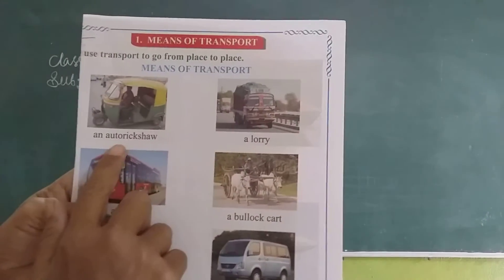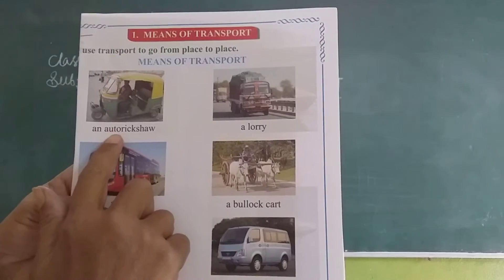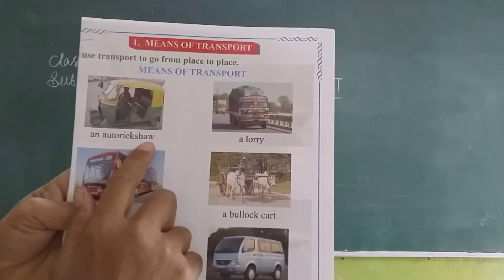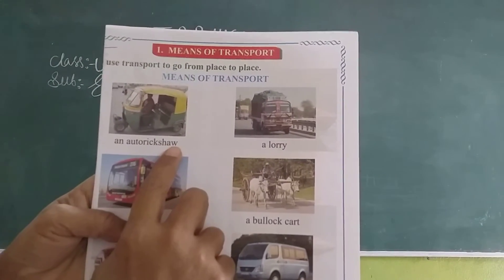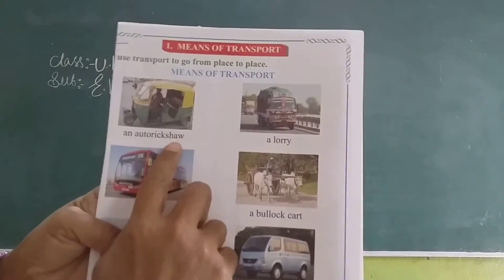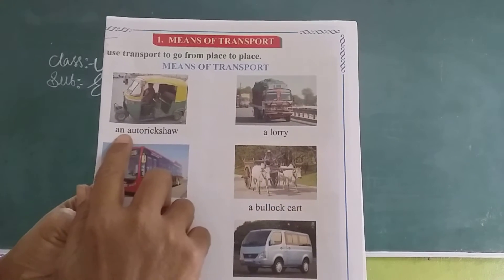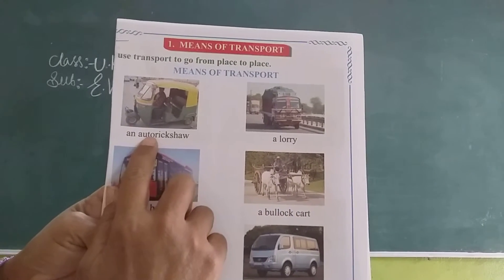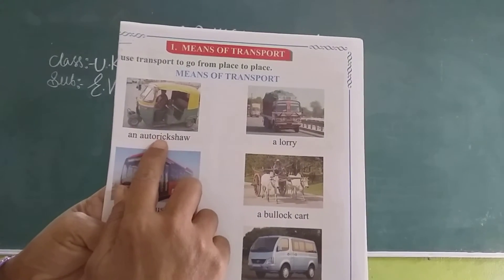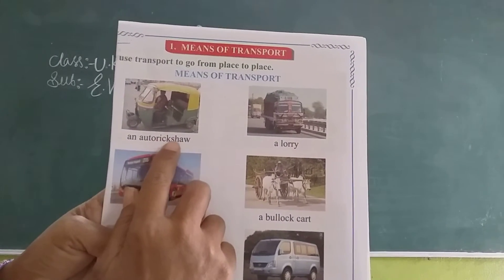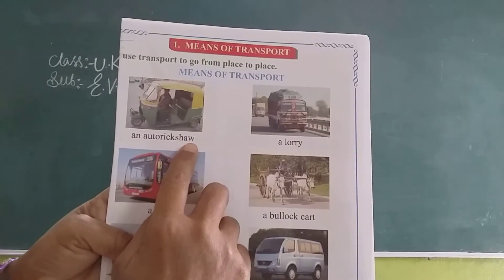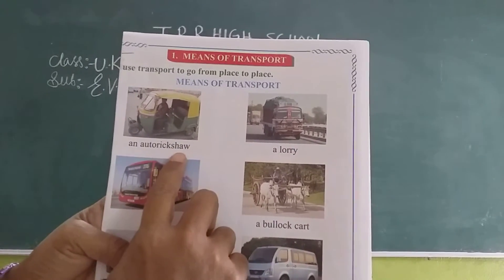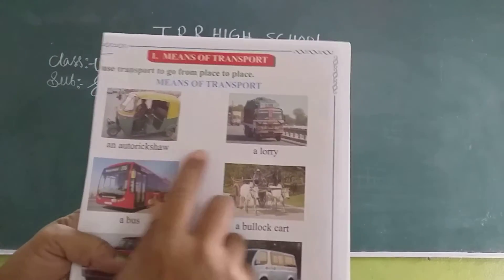Look at here. What is the first one? Auto rickshaw. What is the spelling? Look at here — A-U-T-O-R-I-C-K-S-H-A-W. Auto rickshaw.